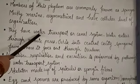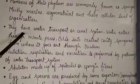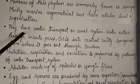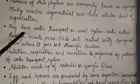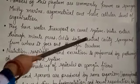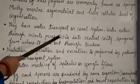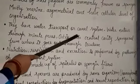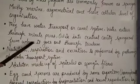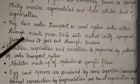They have a water transport or canal system. Water enters through minor pores called ostia into the central cavity, the spongocoel, from where it goes out through the osculum.